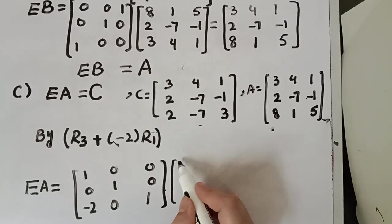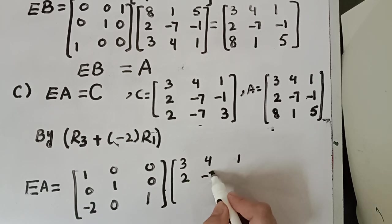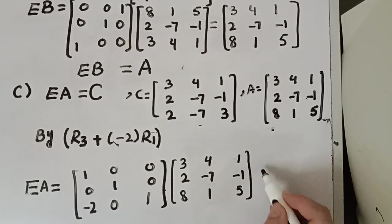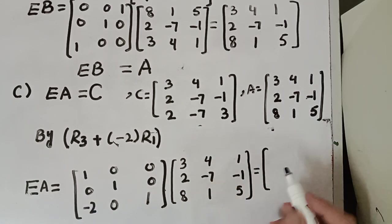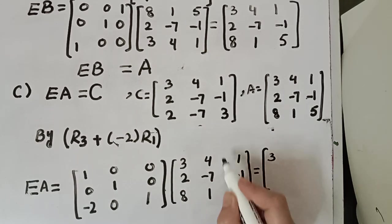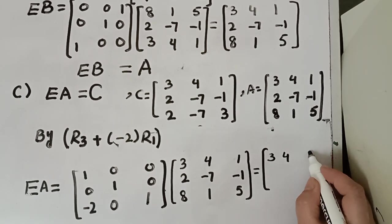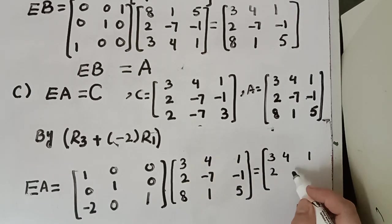In this, matrix A is: 3, 4, 1; 2, negative 7, negative 1; 8, 1, 5. The resultant: first row with first column gives 3; first row with second column gives 4; first row with third column gives 1. Second row with first column gives 2, negative 7, negative 1.